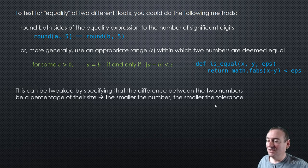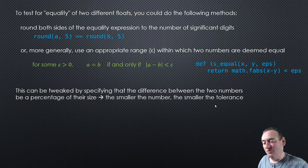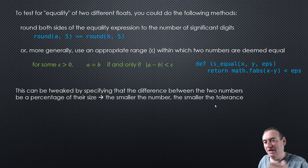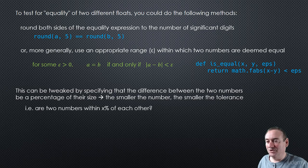This can be tweaked by specifying that the difference between the two numbers be a percentage of their size. In other words, the smaller the number, the smaller the tolerance; the larger the number, the larger the tolerance. In other words, are our two numbers within a certain percentage of each other? This is just a tweak — instead of using an absolute value here, we're using a relative value.